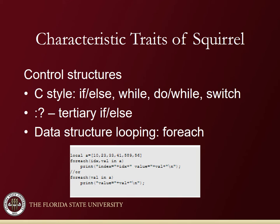Squirrel uses all the normal control flow statements: if, else, while, do-while, and switch. All of these control structures follow C/C++ style syntax and execute in the same manner. There is also support for the ternary if-else, which also follows C/C++ style syntax. A built-in looping structure for iterating through data structures is the foreach keyword — for example, foreach(index, value in a) where a is a table or array.